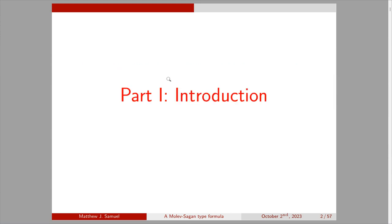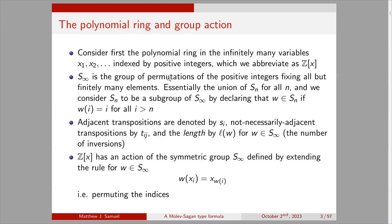I'm going to start with an introduction to Schubert polynomials and related topics, starting at the very beginning — defining the polynomial ring in infinitely many variables. There are x variables indexed by positive integers, and we'll just call this ring Z[x]. S_infinity is the group of permutations of the positive integers that fix all but finitely many elements, which we can consider as the union of S_n for all n, where S_n is the subgroup such that w(i) = i for all i greater than n.